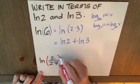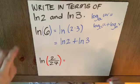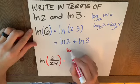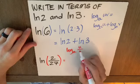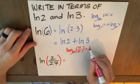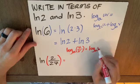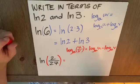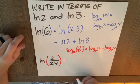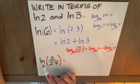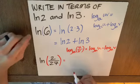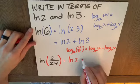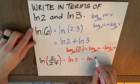This is our argument. We're going to use the quotient property, which says log of any base a of u over v as our argument is log a u minus log a v. Playing the role of u today is 2. Playing the role of v is 27. Playing the role of a is e, 2.71828, because it's the natural log. So we can expand this by writing this as natural log of 2, careful, minus natural log of 27.